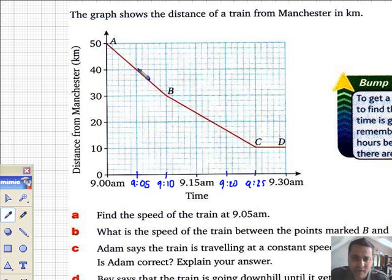Find the speed of the train at 9.05. Well, you know speed equals distance divided by time. We can see that at 9.05, we're represented by this line here from A to B. A to B represents a time interval of 10 minutes. And the distance covered will be from 50 down to 30. That's essentially 20 kilometers.